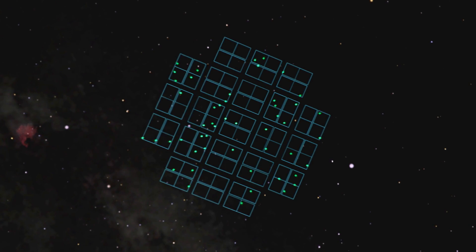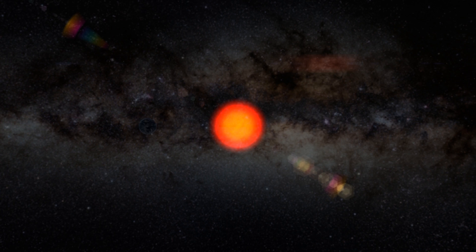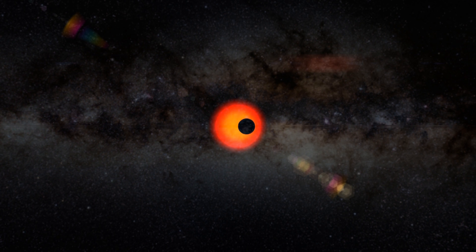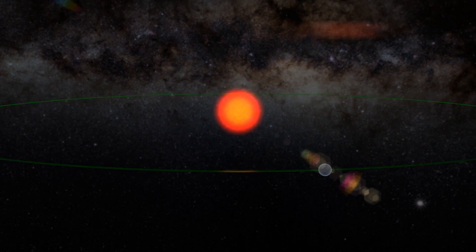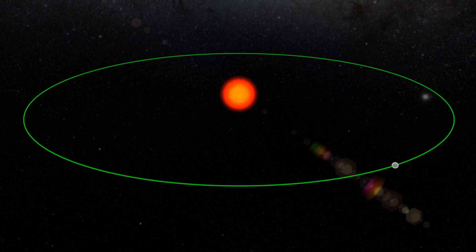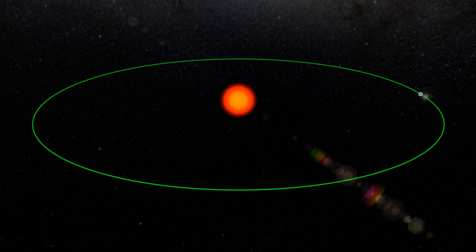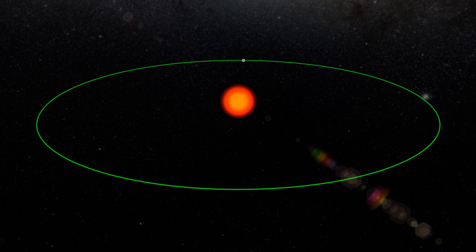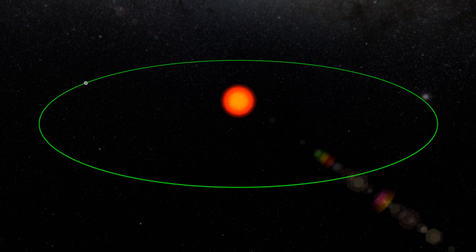But we're missing much of the picture. Kepler could only spot planets that pass between their parent stars and the telescope's viewpoint. Even a slight tilt in the planet's orbit would make it nearly invisible. And, the farther out a planet orbits, the more likely it will be missed.